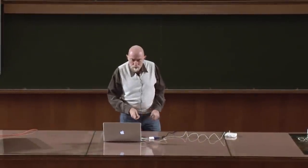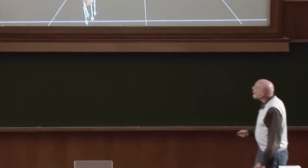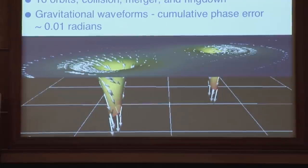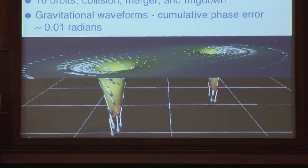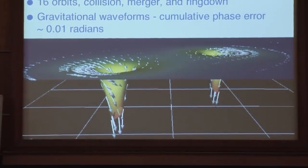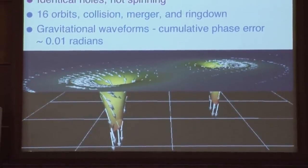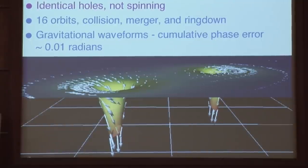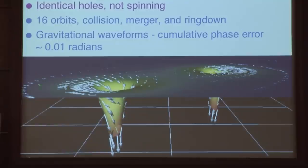This is the state of the art today. The only really nice movie showing the full space-time geometry in a merger is for non-spinning black holes. There are 16 orbits of in-spiral followed by the collision, merger, and ring-down. The gravitational waveforms have a cumulative phase error of one one-hundredth of a radian—higher accuracy than LIGO and Virgo are probably ever going to need. You'll see an embedding diagram showing the warping of space around the two black holes, the color-coded lapse function, and the negative of the shift—which you can think of as the velocity of dragging of inertial frames.